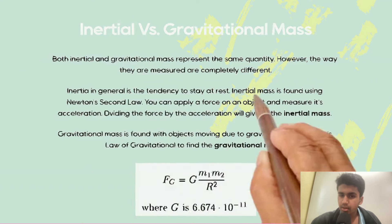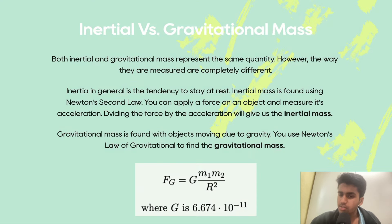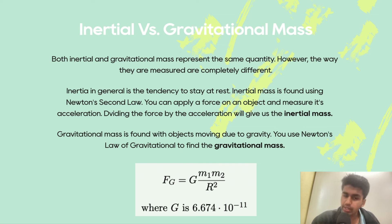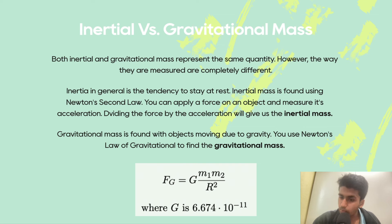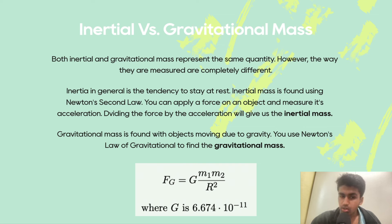Inertial versus gravitational mass. Both inertial and gravitational mass represent the same quantity, but the way they are measured are completely different. We already know that inertia in general is the tendency of an object to stay at rest. Inertial mass is found using Newton's second law — you apply a force on an object and then measure its acceleration; dividing force by acceleration gives you the inertial mass. For gravitational mass, we find it by objects moving due to gravity, using Newton's law of gravitation.